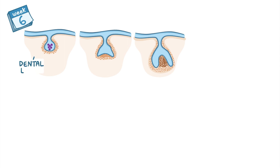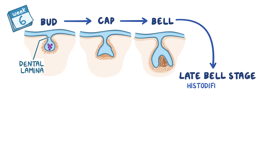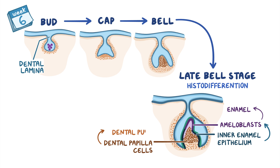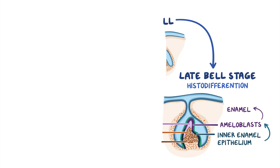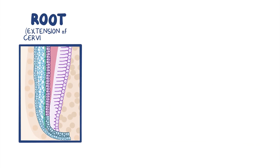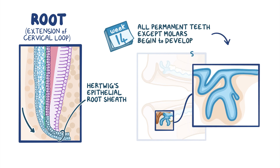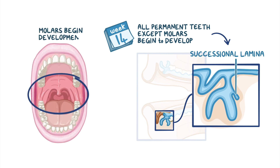As a quick recap: teeth begin to develop around week 6 of intrauterine life and can be divided into three main morphological stages. The dental lamina forms outpouchings known as dental placodes which proliferate into enamel organs, changing in shape starting as the bud, then cap, and finally the bell stage. At the late bell stage, histodifferentiation occurs: inner epithelial cells become ameloblasts which lay down enamel, and dental papilla cells become the dental pulp and odontoblasts which produce dentin. The root forms as an extension of cervical loop cells into Hertwig's epithelial root sheath. By week 14, all permanent teeth except the molars begin to develop from the successional lamina, whereas permanent molars begin developing directly from the dental lamina by week 20 and continue till 5 years after birth.